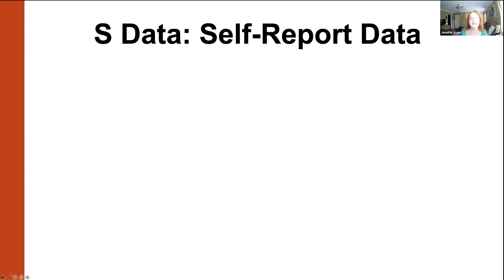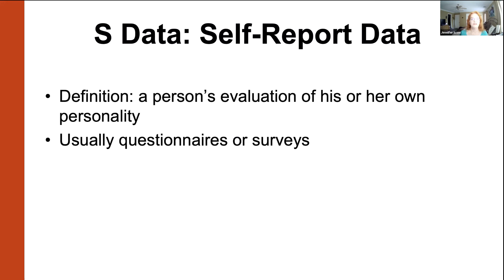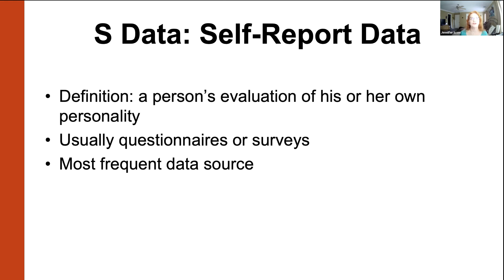The last type of data is self-report. Self-report data is your own report of your personality — what you tell someone when asked is your self-report. Usually this is done with questionnaires or surveys, sometimes in interviews, which is more time-consuming but used particularly in clinical psychology research. This is by far the most common way we collect data about personality, probably because you can get a whole bunch of information about people in a really short amount of time with self-report.